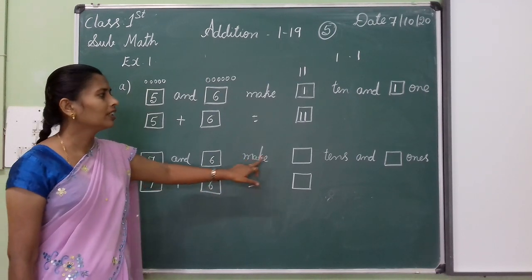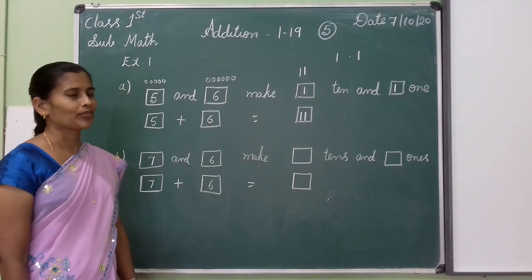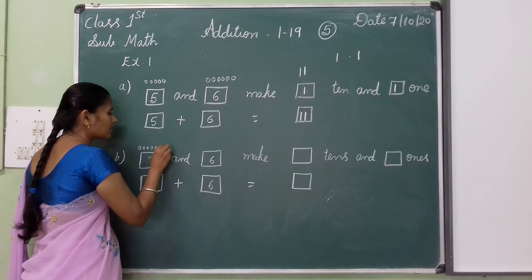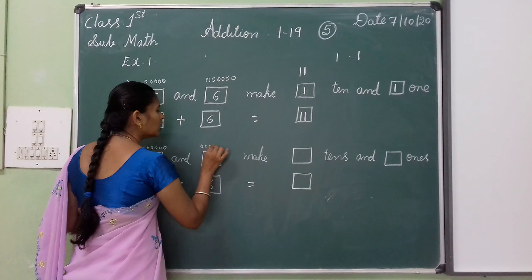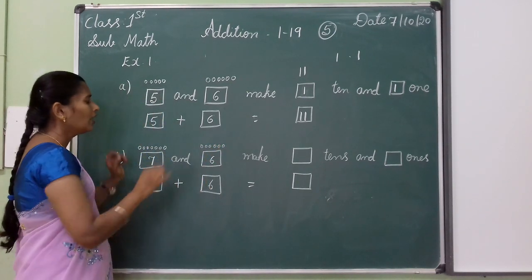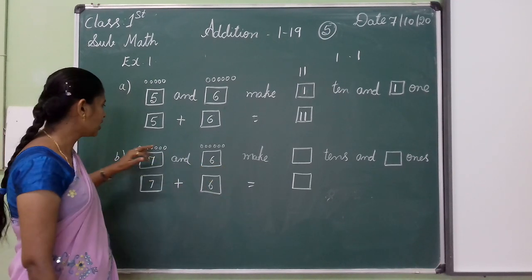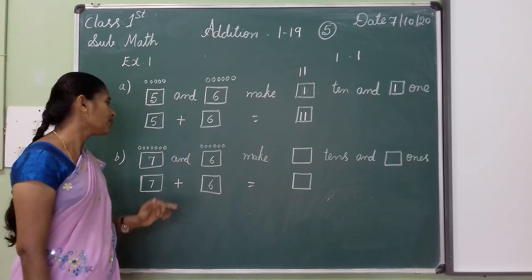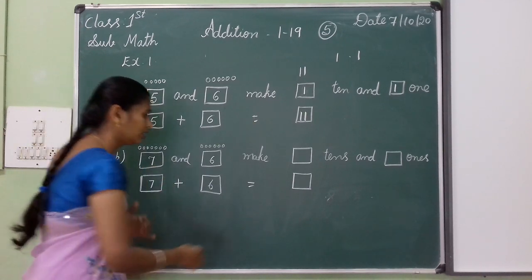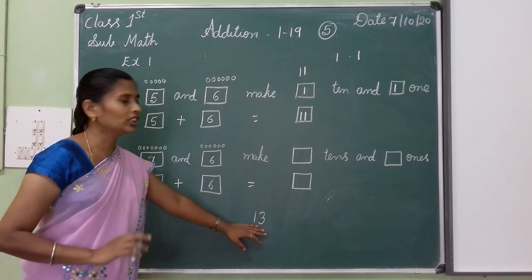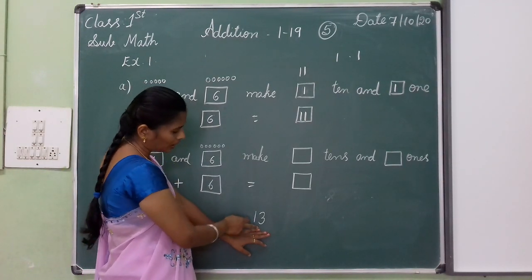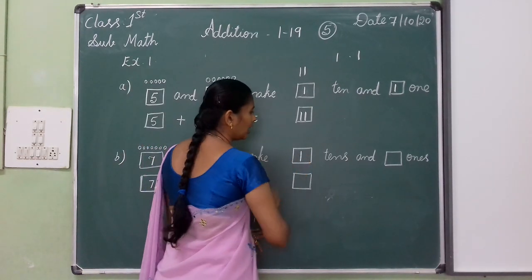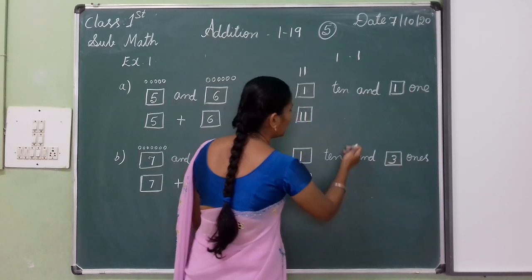Next one. Seven and six — how many circles are going to be seven? 1, 2, 3, 4, 5, 6, 7. Then 1, 2, 3, 4, 5, 6, 7. When I add these two numbers — seven and six — I count: 1, 2, 3, 4, 5, 6, 7, 8, 9, 10, 11, 12, 13. When I add seven and six I got thirteen. Two digit number. One ten and three ones.